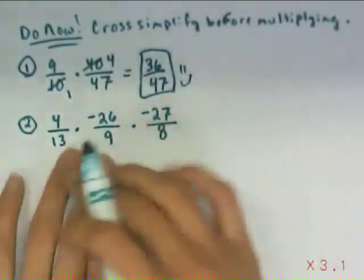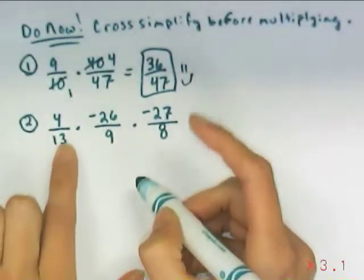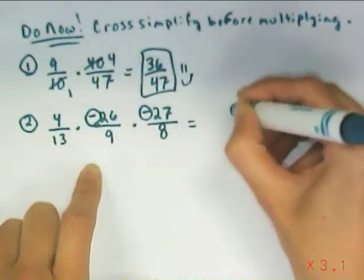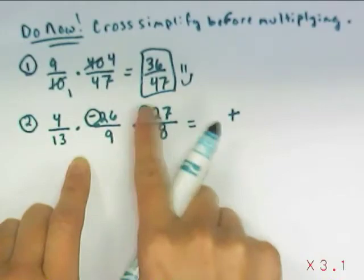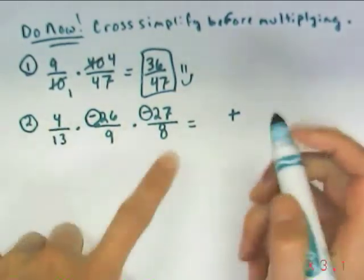With the next example, we have 3 factors, so now we have options of combinations. I am going to remember my integer rules, however. 2 negatives mean I will have a positive answer. So I'm going to go ahead and circle them, put my positive here.